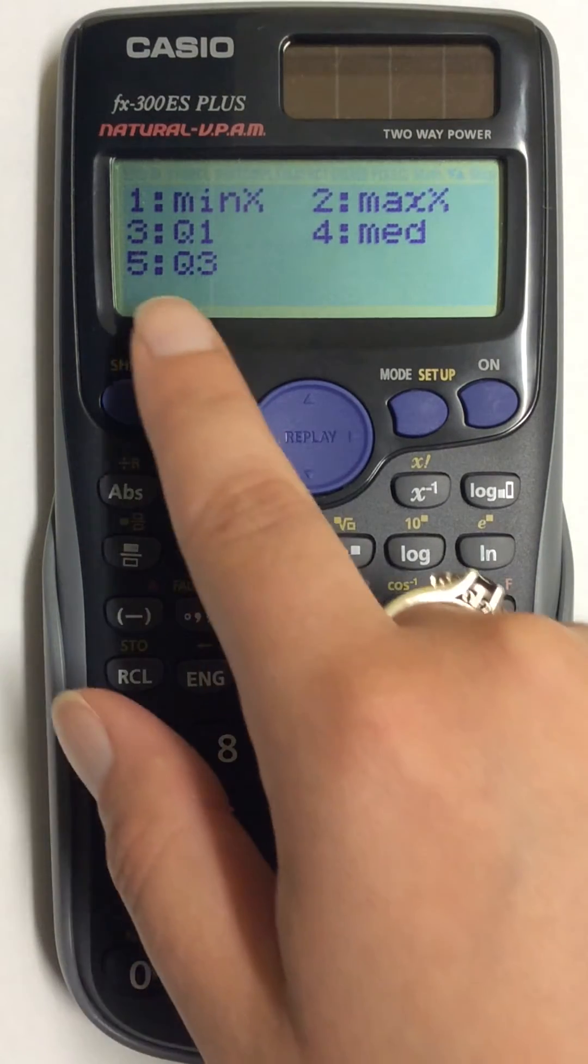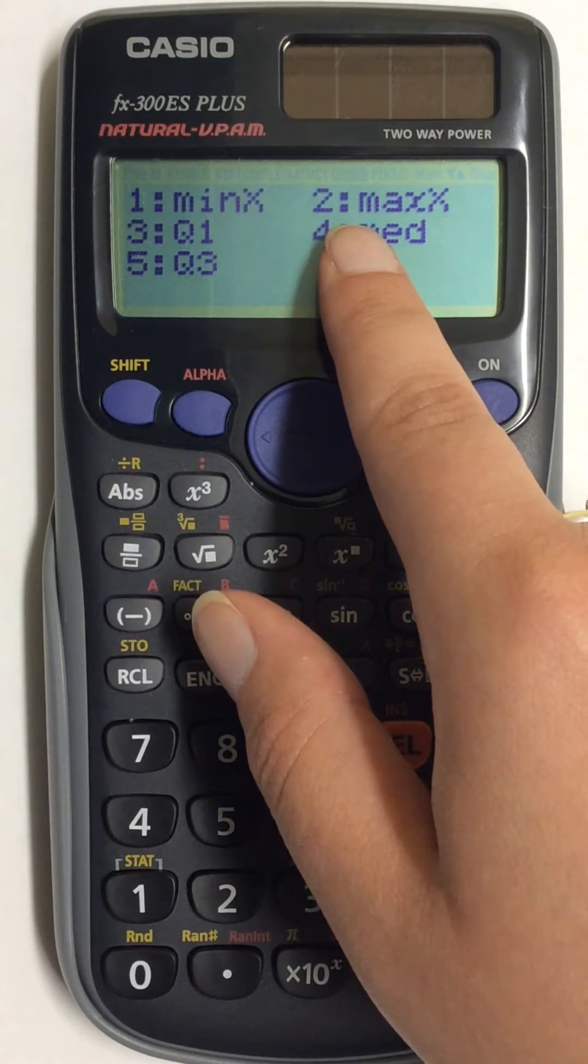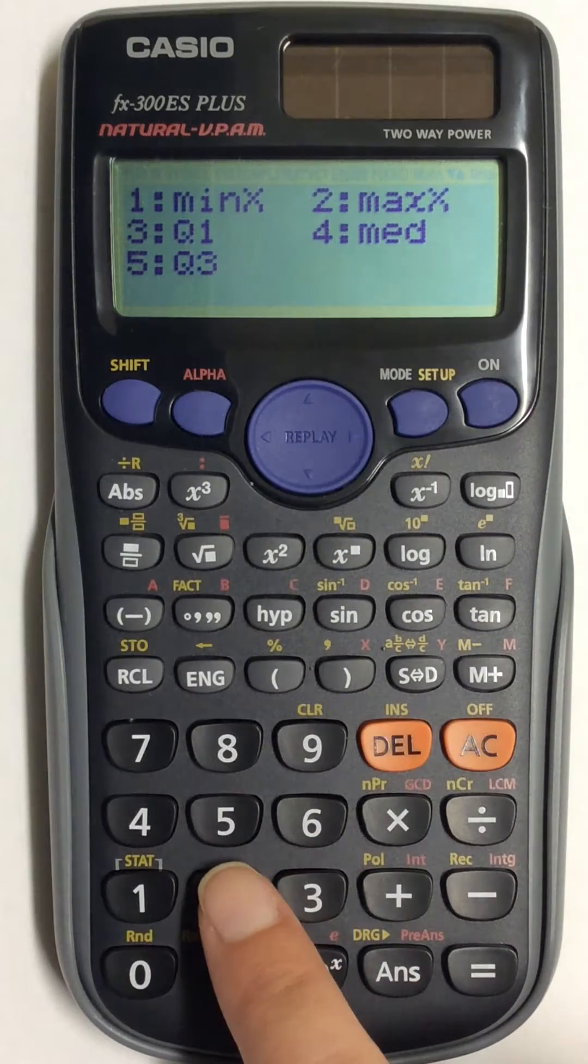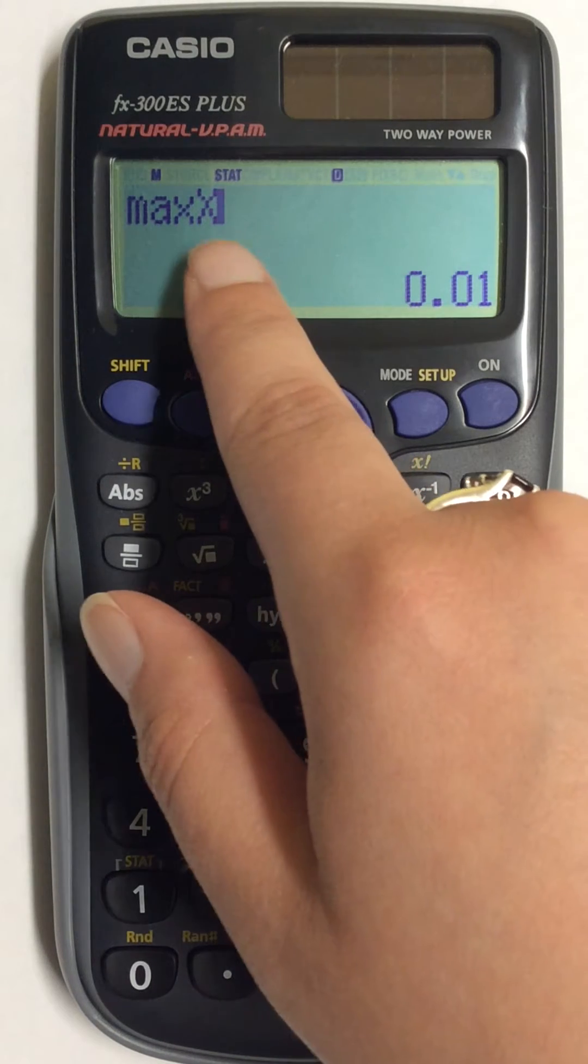All of your options will come back, and if you wanted your maximum next, you could press number 2, and as you see, your cursor is still blinking.